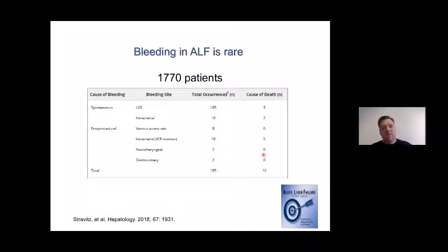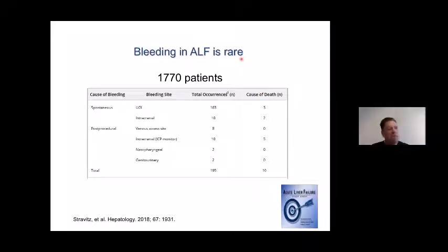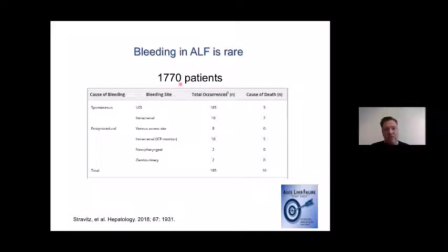I'll start with discussing coagulation changes in ALF because we have more clinical data there. It's important to realize that bleeding in ALF is actually quite rare — in contrast to what was believed maybe 20 years ago, when every hepatologist told me that in ALF these patients really bleed. Data from more than 1,700 patients from the United States Acute Liver Failure Study Group show that in more than 1,700 patients, less than 200 bleed.